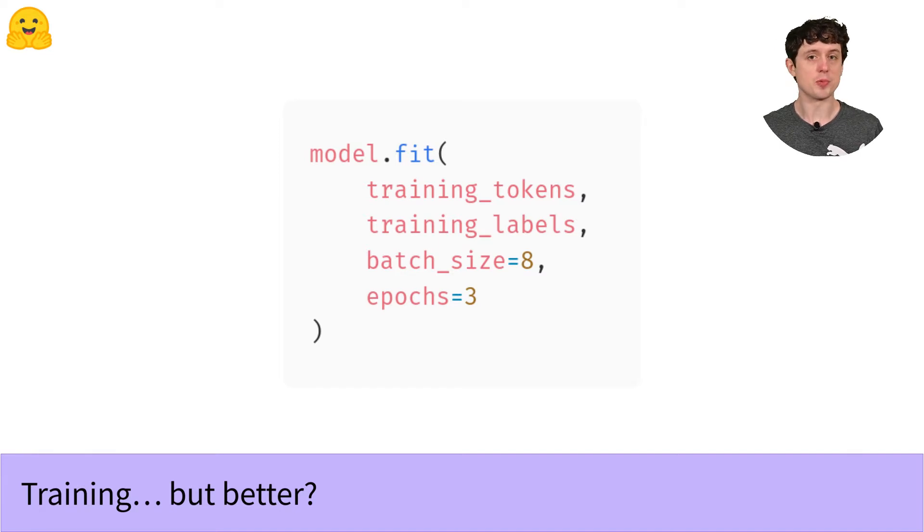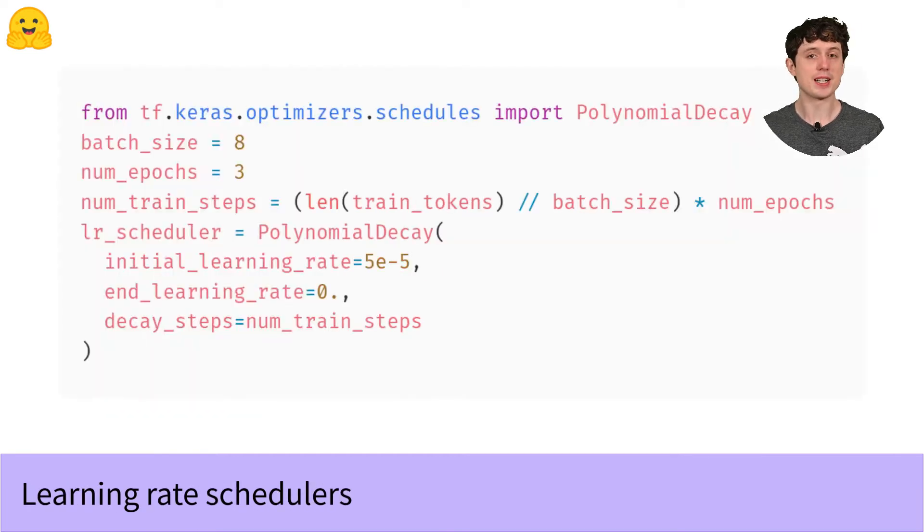The first is that it's way too high for our models. So by default, Adam uses a learning rate of 10 to the minus 3, which is very high for training transformers. We're going to start at 5 by 10 to the minus 5, which is 20 times lower than the default.